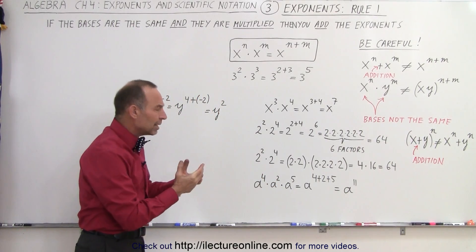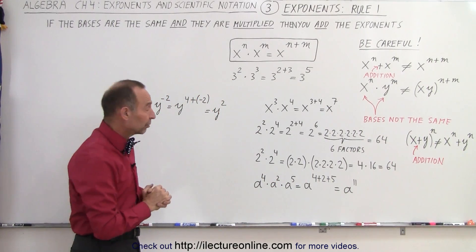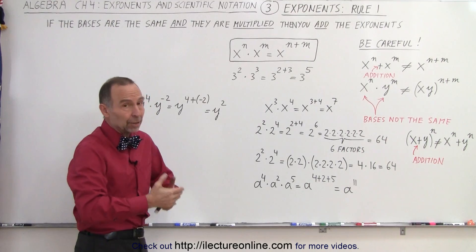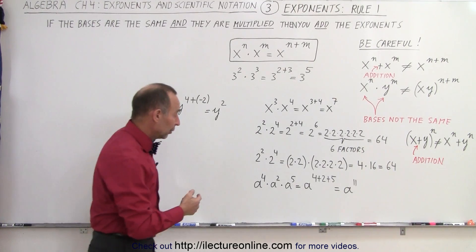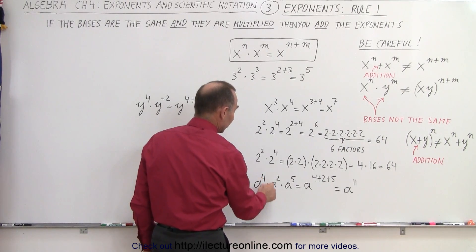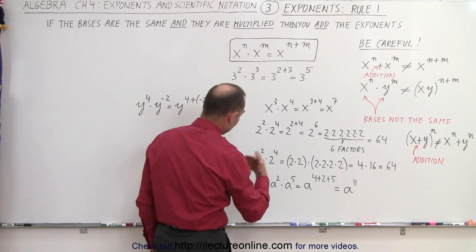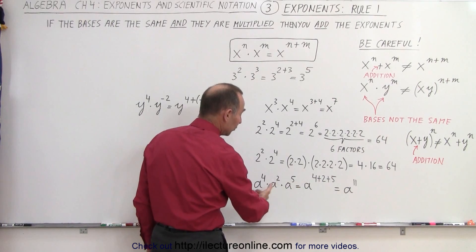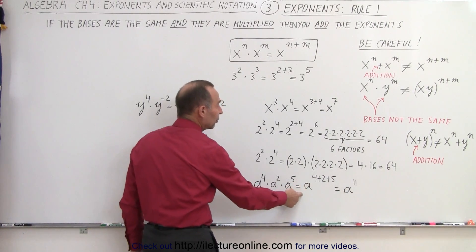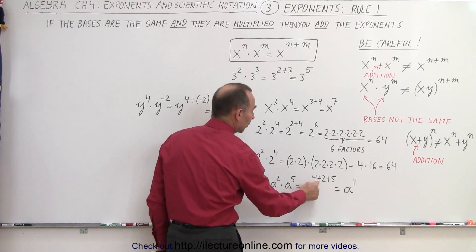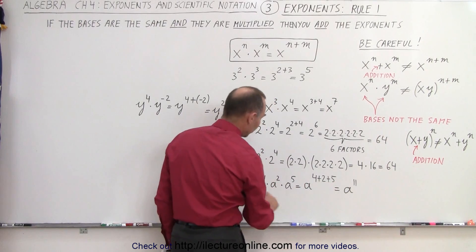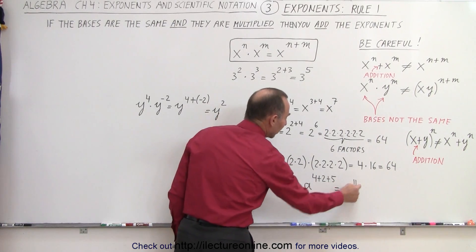What if you have three numbers multiplied together, each with exponents, like the number a? A can represent any number. Notice we have a times a times a, raised to the fourth power, to the second power, to the fifth power. The rule is the same. When we have more than two bases, when you multiply, you can simply add all the exponents, four plus two plus five, which is 11. So this is equal to a to the 11th.